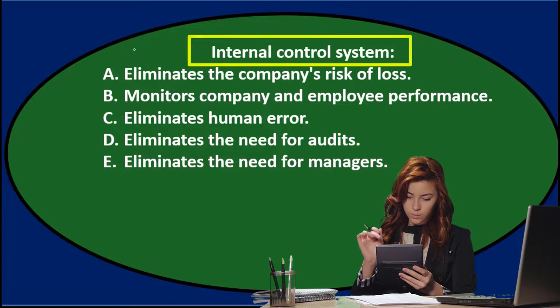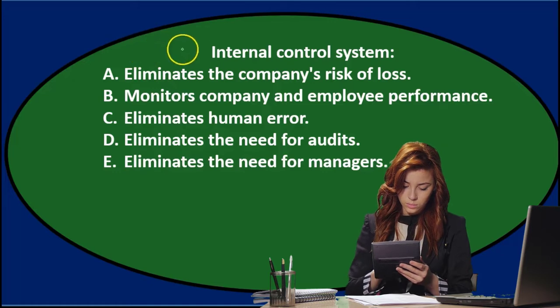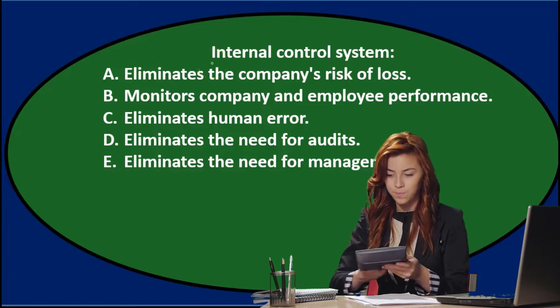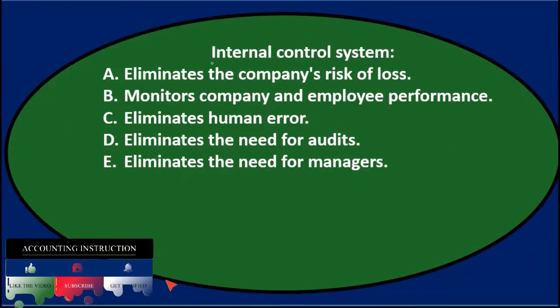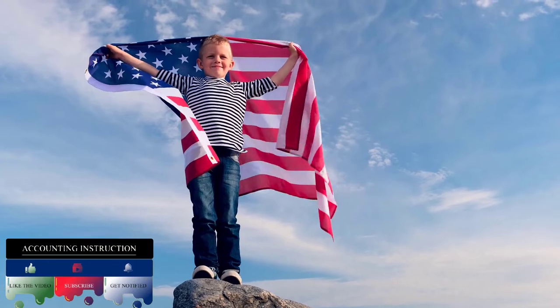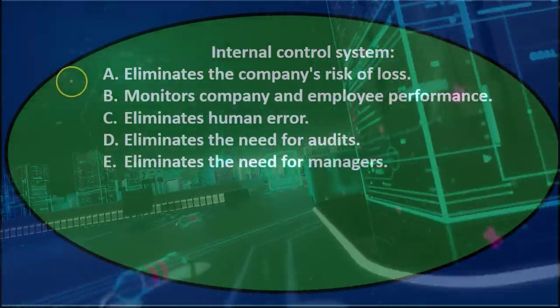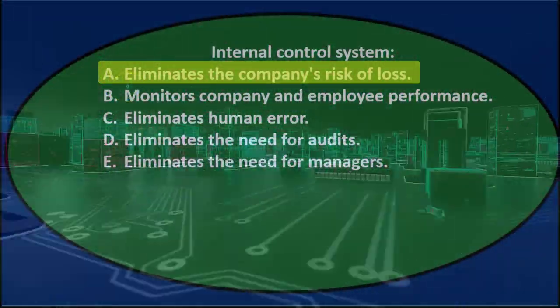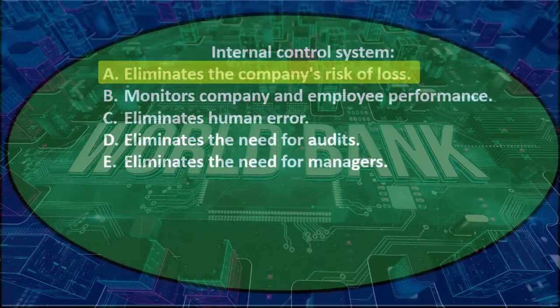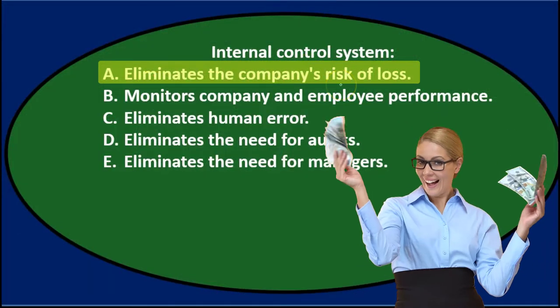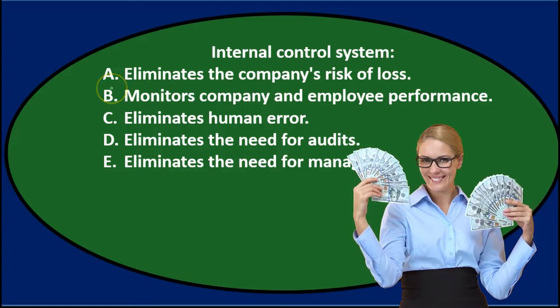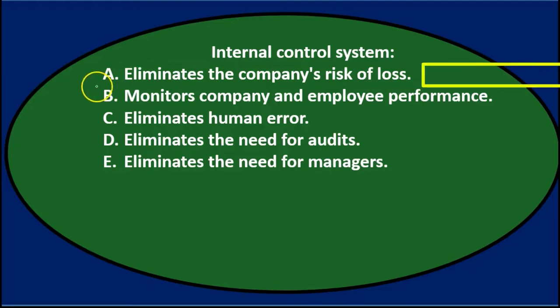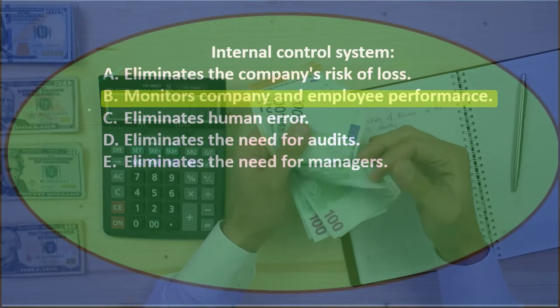We're going to read through this one more time and see if we can cross things off with the process of elimination. If we think about internal control systems — they help us safeguard assets, comply with policies and procedures, adhere to laws and regulations, and make better record keeping processes. A. Eliminate the company's risk of loss — the word 'eliminate' is pretty definitive. No internal control could eliminate the risk of loss; it might reduce the risk, but eliminate means nothing is off the table. Typically a loss could still happen.